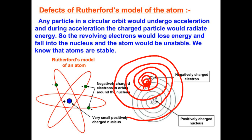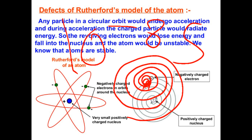The electron would fall into the central region where the protons and nucleus are present. If this happened, the atom would collapse in 10 to the power of minus 8 seconds — a very short span of time. But practically this does not happen, meaning the negative charge must be in some undiscovered place. This was the drawback of Rutherford's model.